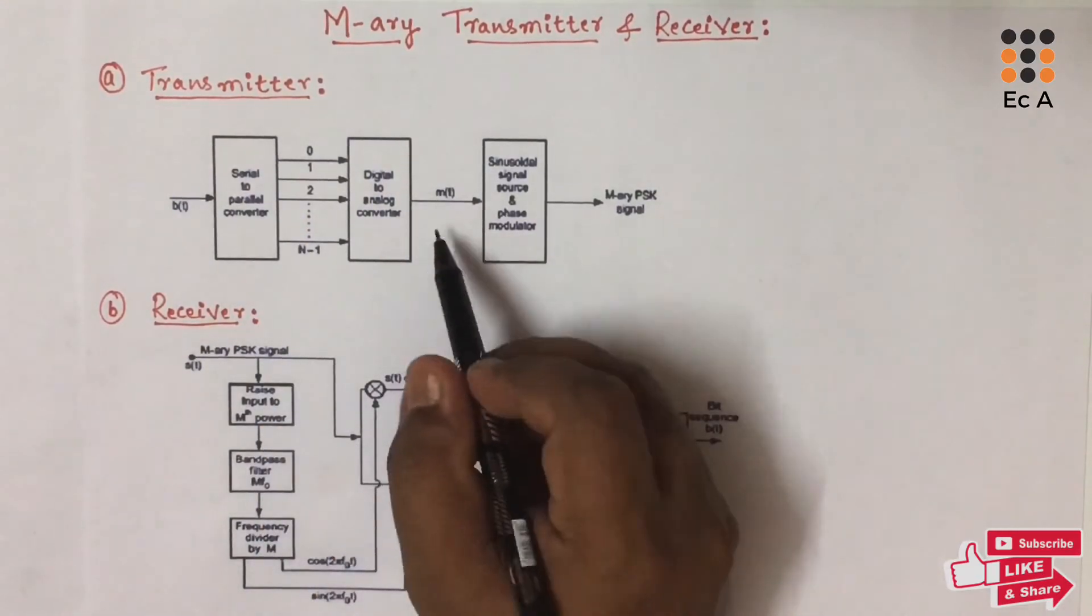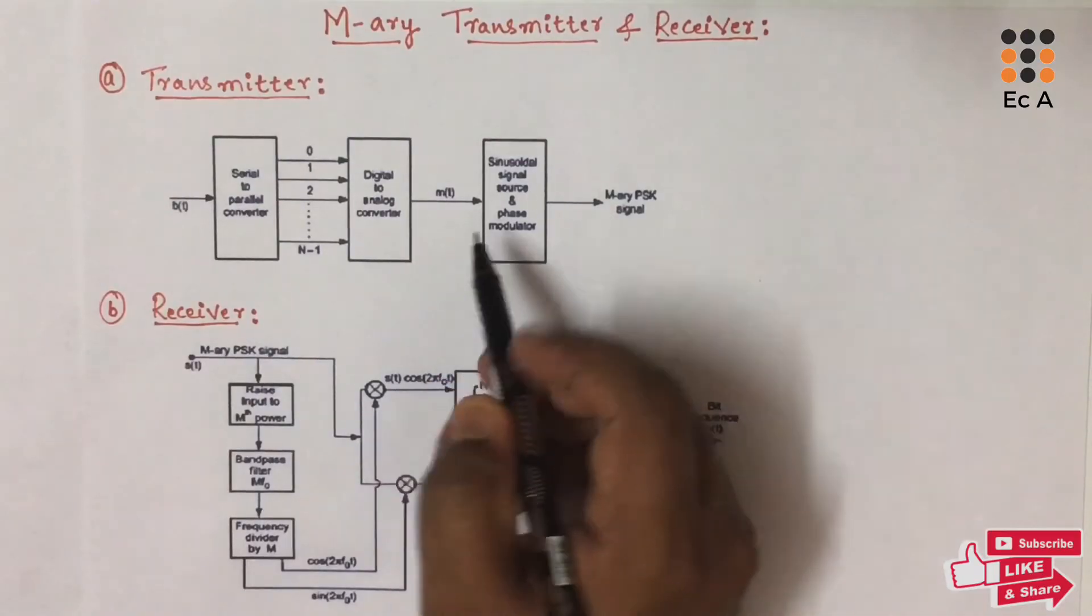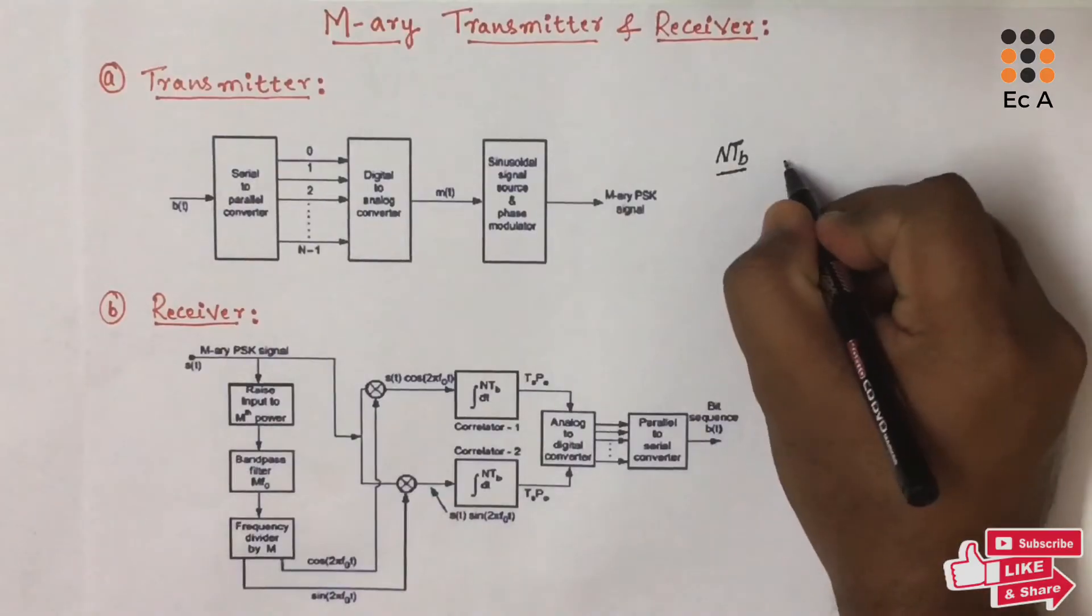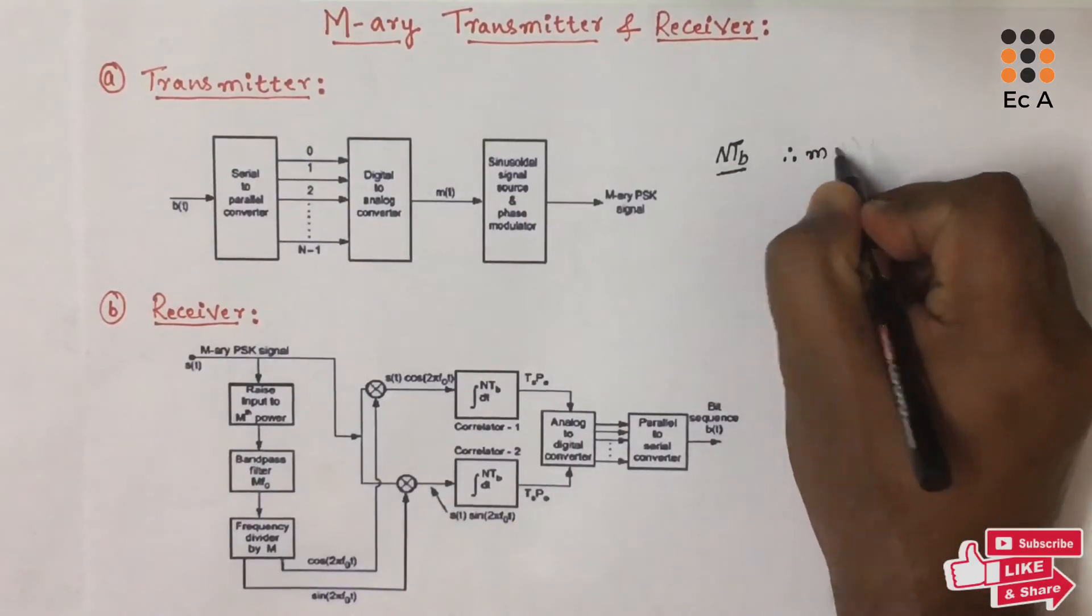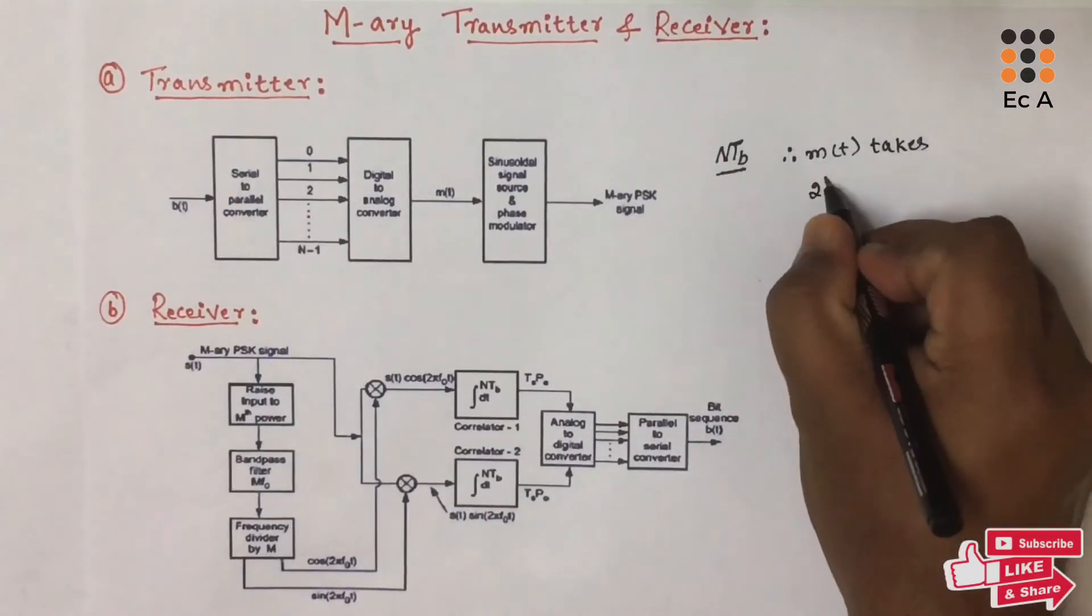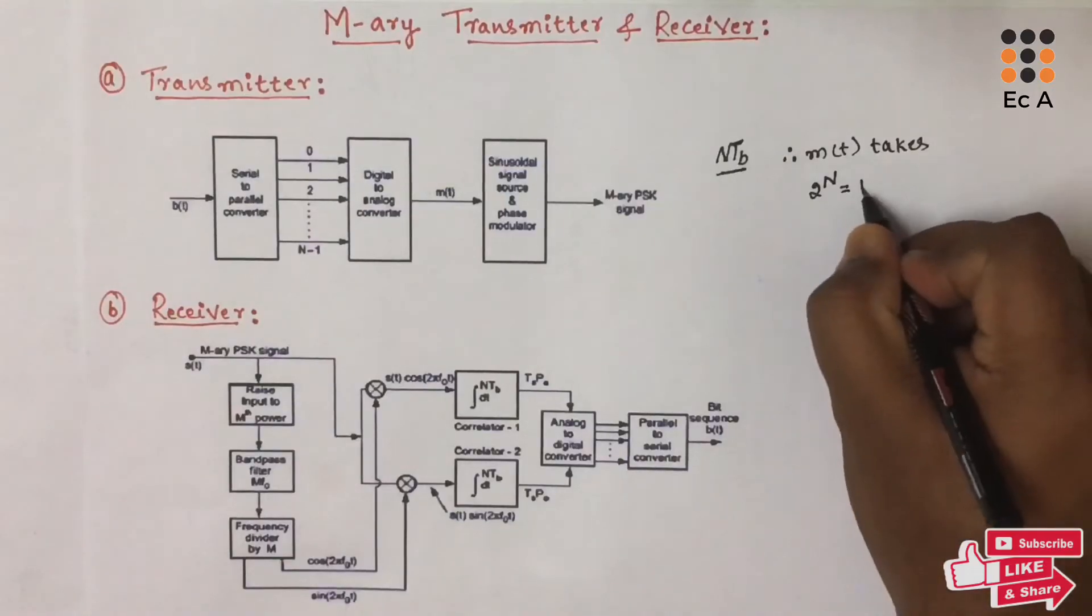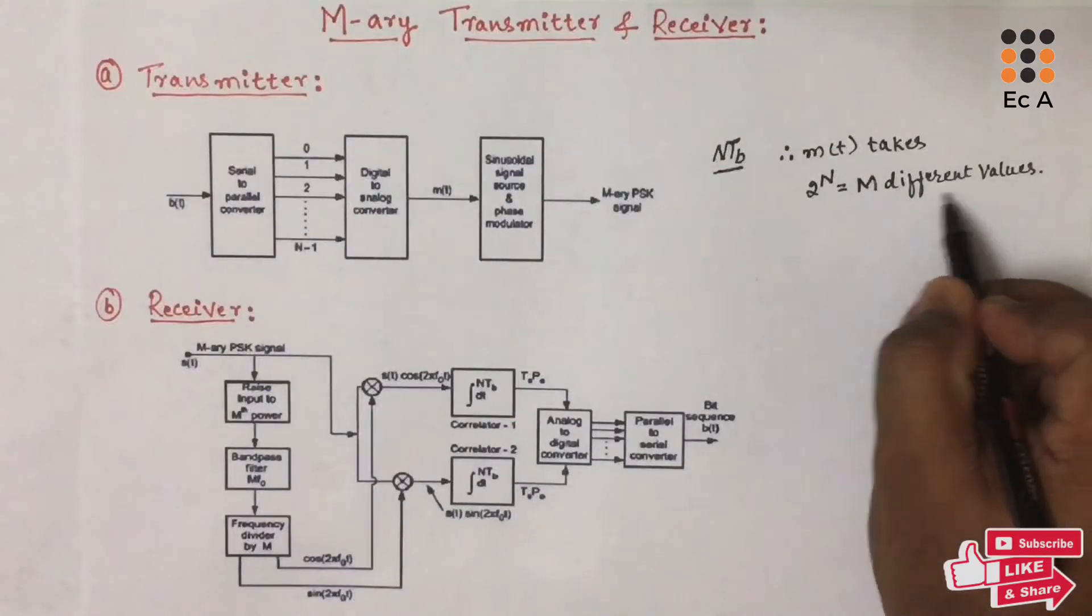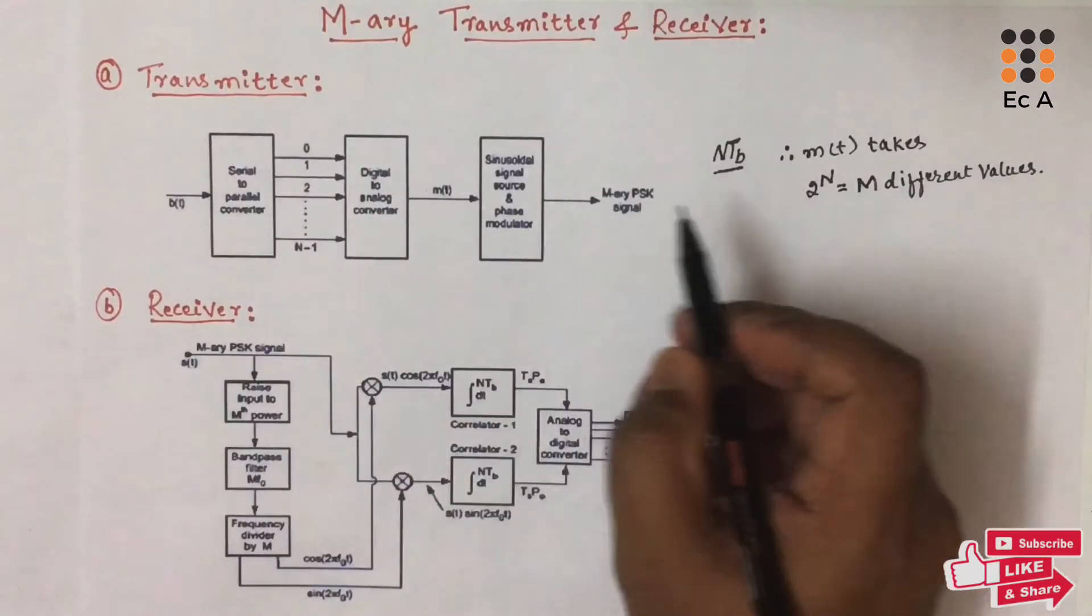Hence, we can say M(t) is held for the period nTB. Therefore, we can say M(t) takes 2 to the power of M that will produce M different values. This value will depend upon the input bits.